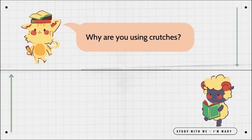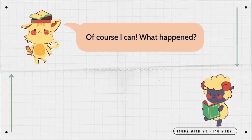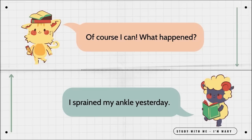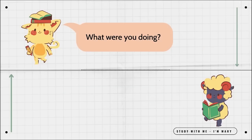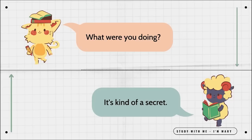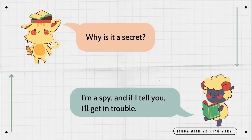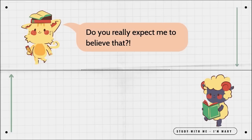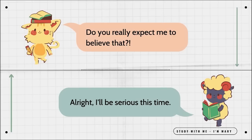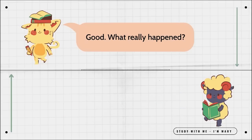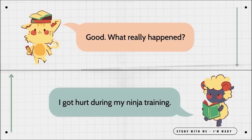Why are you using crutches? Can you keep a secret? Of course I can. What happened? I sprained my ankle yesterday. What were you doing? It's kind of a secret. Why is it a secret? I'm a spy, and if I tell you, I'll get in trouble. Do you really expect me to believe that? All right. I'll be serious this time. Good. What really happened? I got hurt during my ninja training.